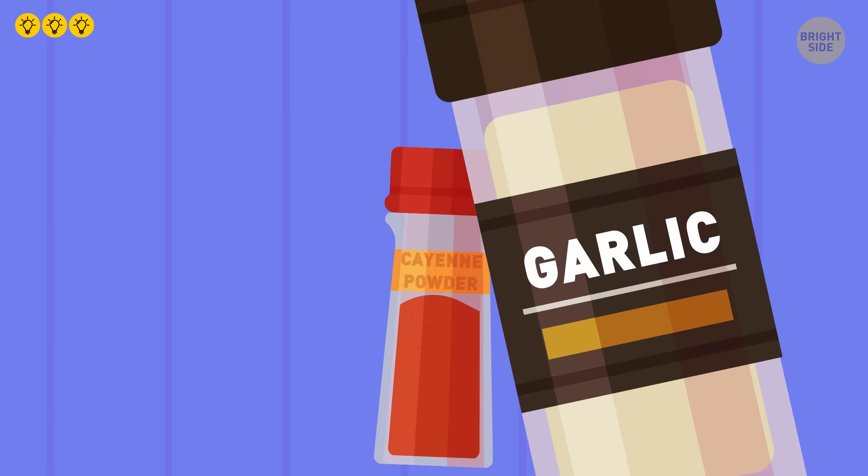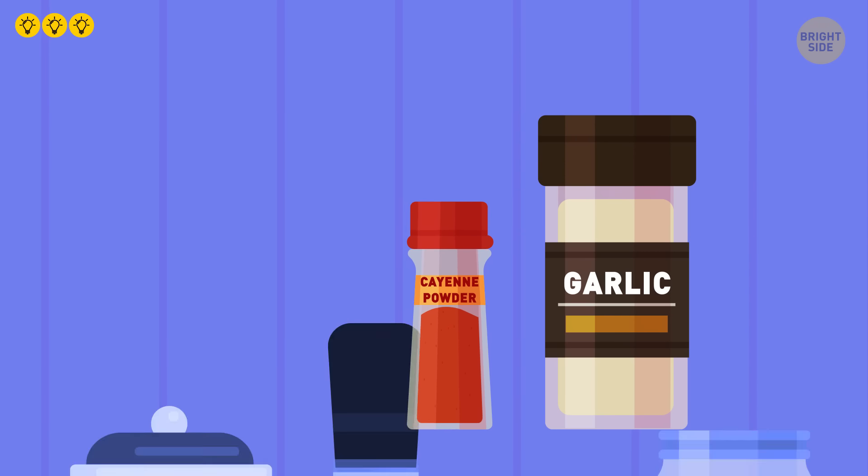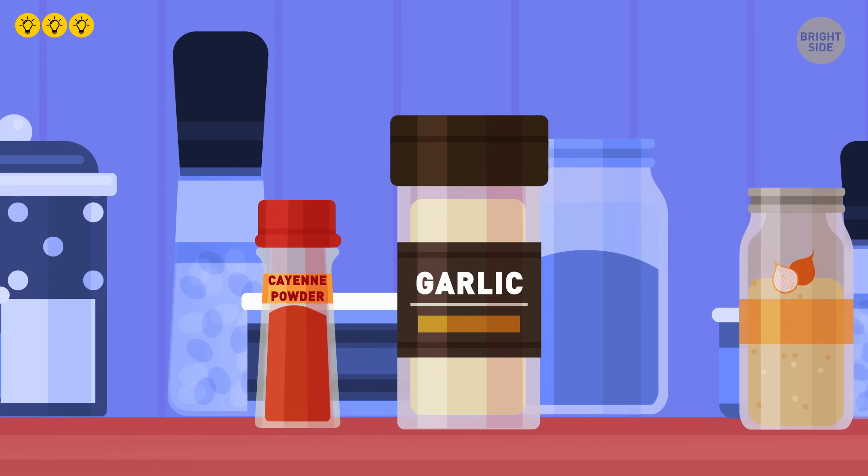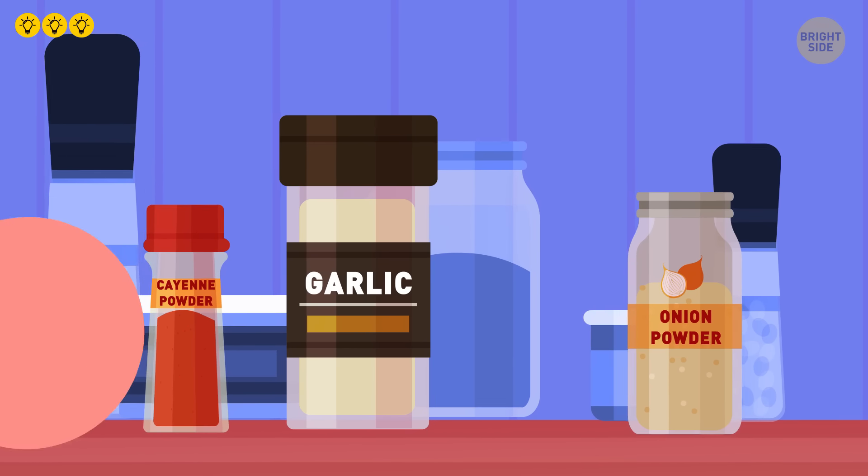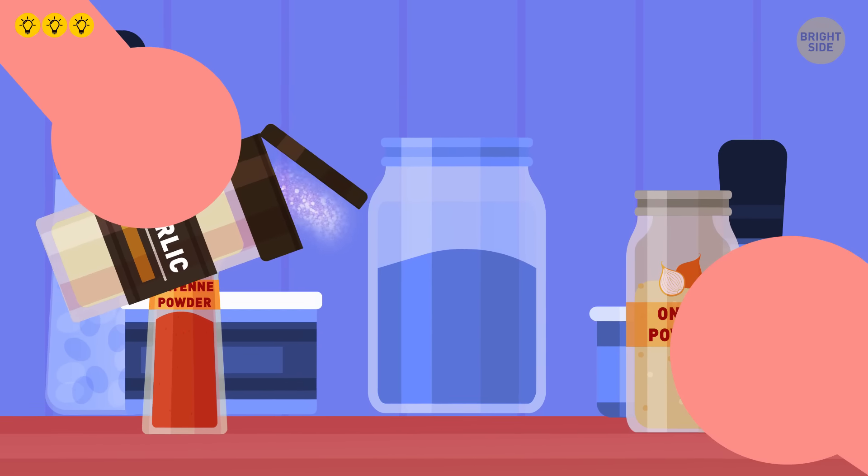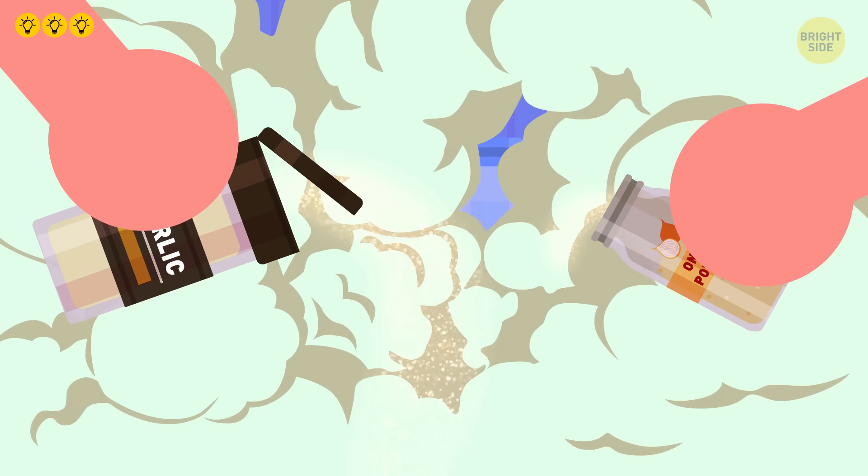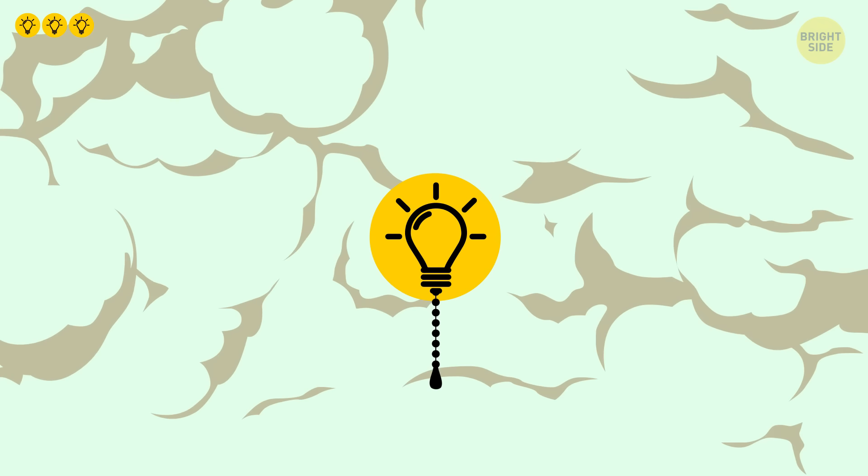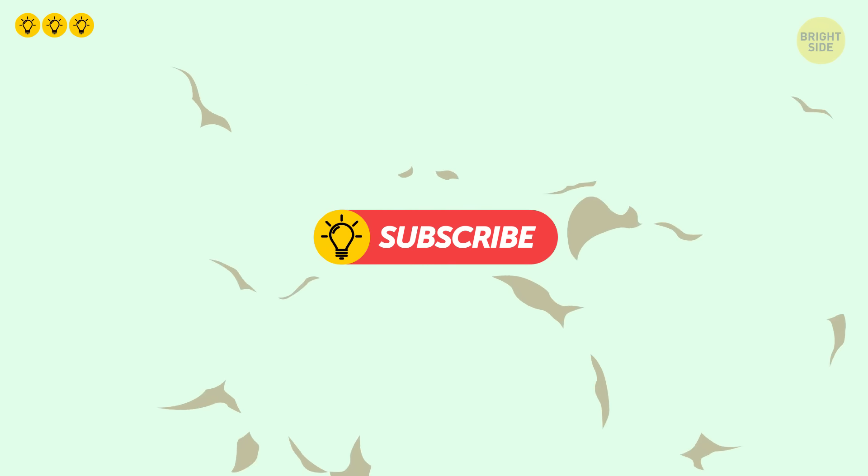Garlic or cayenne powder. There are plenty of spices with strong odors that repel roaches. You can use garlic or onion powder and sprinkle it in and around their favorite hangout spots. You might even mix the two together for a super-pungent repellent.